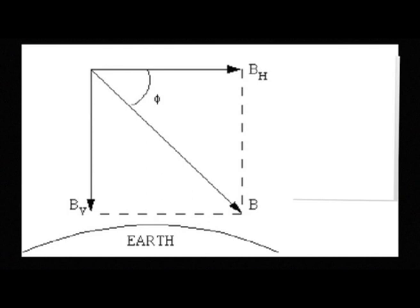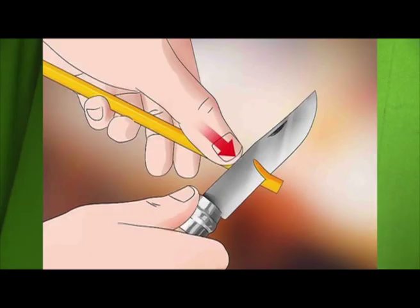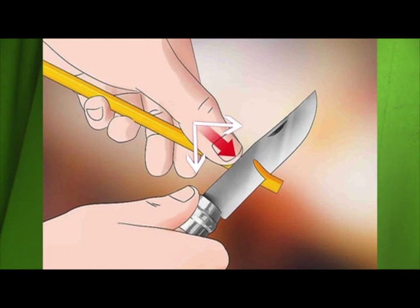Let's look at some examples of resolution of vectors from our day-to-day life. We have Earth's magnetic field, which has two components: a vertical component and a horizontal component. Similarly, when we sharpen a pencil, we apply force at an angle to the pencil — the component perpendicular to the pencil cuts the pencil, and the component parallel to the pencil removes the wooden part. So in this manner, we have many examples of resolution of vectors in our day-to-day life.